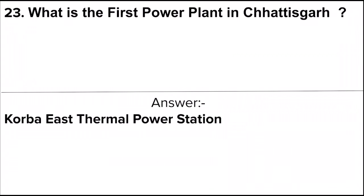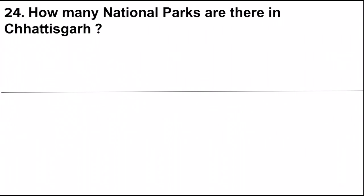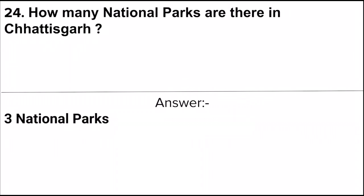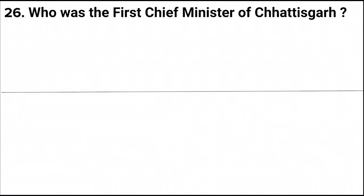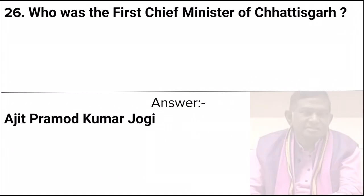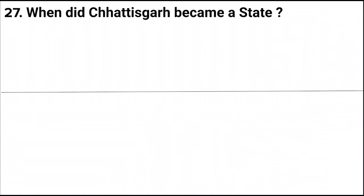Next question: What is the first power plant in Chhattisgarh? Answer: Korba Thermal Power Station. Next question: How many national parks are there in Chhattisgarh? Answer: Three national parks. Next question: Which city is also known as the Prayag of Chhattisgarh? Answer: Rajim. Next question: Who was the first Chief Minister of Chhattisgarh? Answer: Ajit Promot Kumar Jogi.